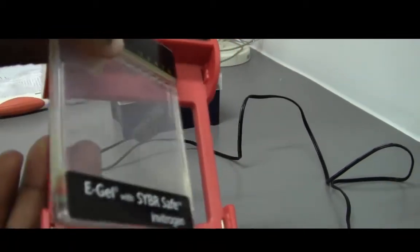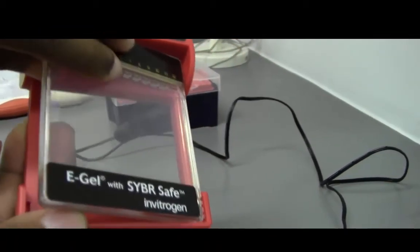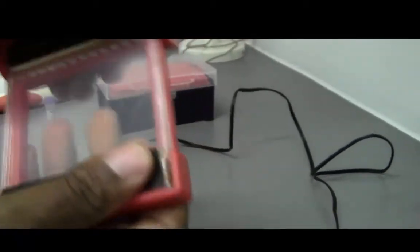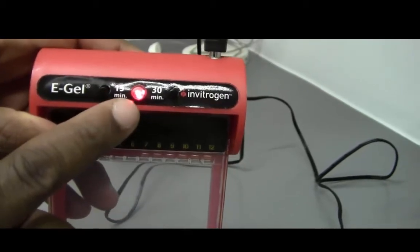So you put that side in first. Make sure it touches. It's in place and then you clip it down and if it's plugged in you'll see a red light.